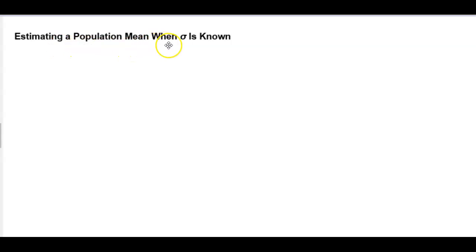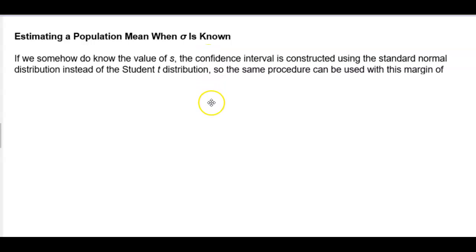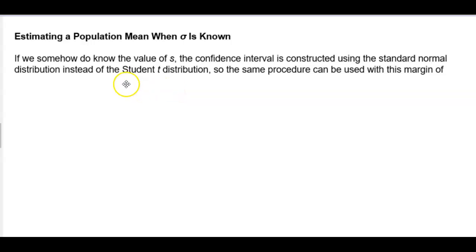Estimating a population mean when the population standard deviation is known. If we somehow do know the value of the standard deviation, the confidence interval is constructed using the standard normal distribution instead of the student t distribution.